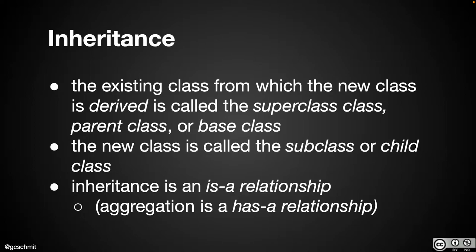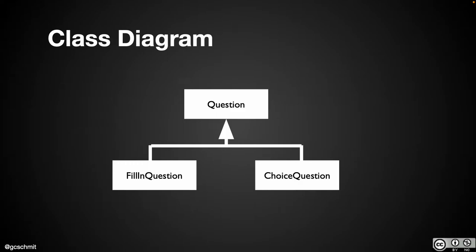The 'is-a' and 'has-a' phrases are surprisingly helpful when we're not sure what type of relationship we have. We can ask: does 'a Picture is a SimplePicture' or 'a Picture has a SimplePicture' make more sense? Or: does 'a Pixel is a color' or 'a Pixel has a color' make more sense? That tells us the relationship type. Up until now it's been easy because we only had has-a relationships; now that we're introducing inheritance, things get more complicated.